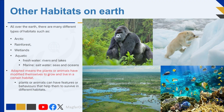All over the earth there are many different types of habitats, such as Arctic, rainforest, wetlands, and aquatic. Within each habitat, animals and plants have adapted to live there. Adapted means the plants or animals have modified themselves to grow and live in a certain habitat. Plants or animals can have features that help them to survive in different habitats.